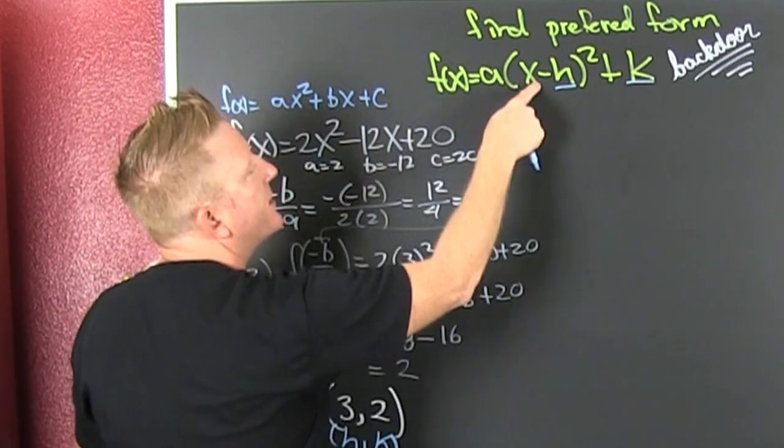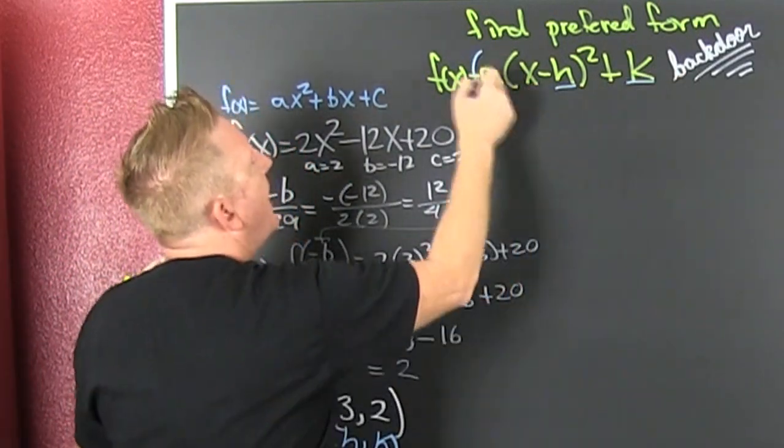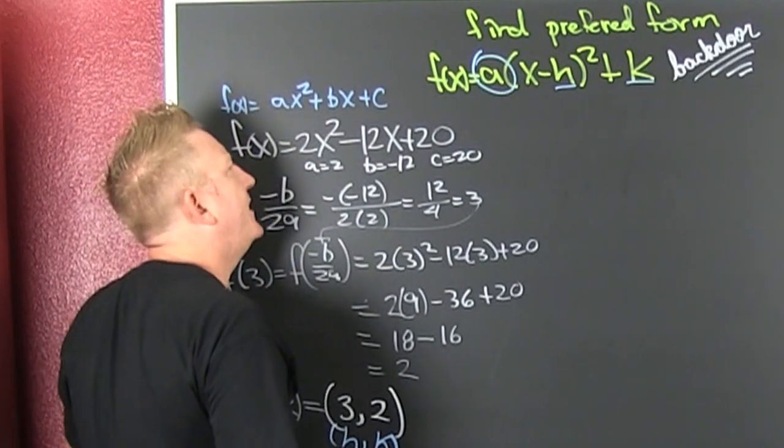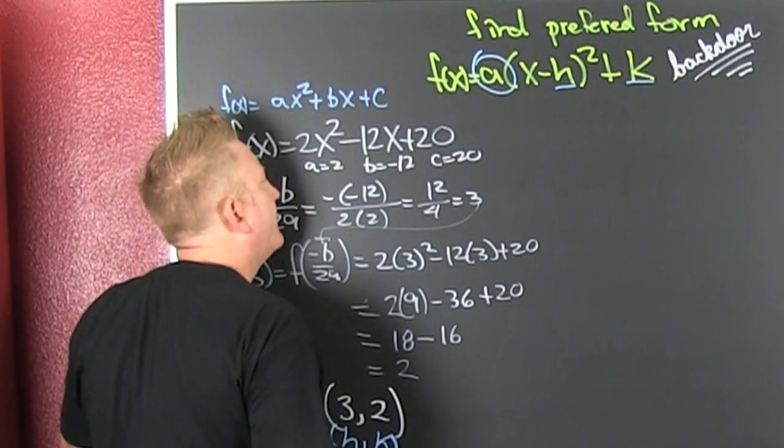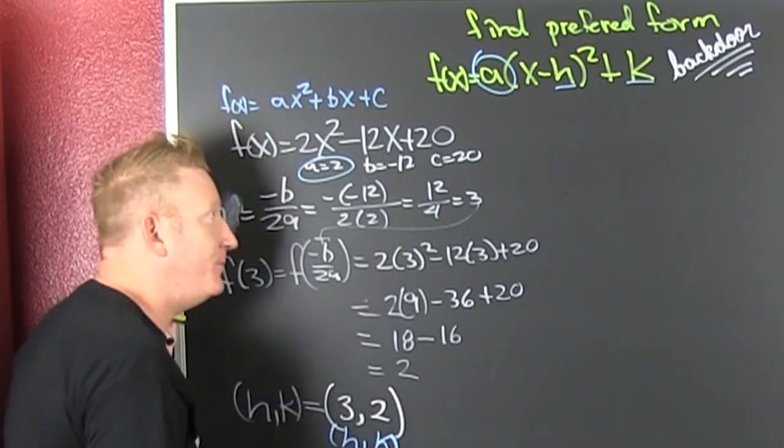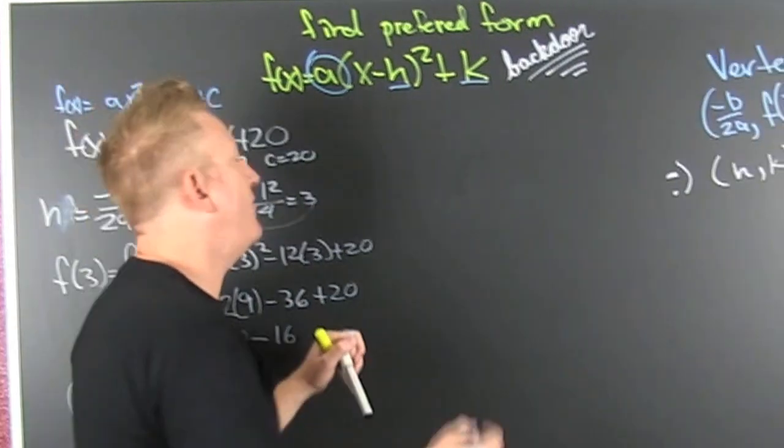Now what do I need? I need my x? No, that's my independent variable. It can be anything. I need to find my a. Where can I find it? Oh, look. There it is. Are you kidding me? Is that easy? Yeah. All right. Fine.